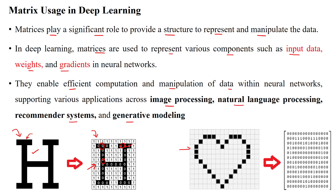Likewise, here we have another image which is the input we are getting from the input data. This image shows the symbol of a heart, represented in the form of zeros and ones. The background is represented as zeros, and the symbol which has black dots is represented using ones. These ones form the symbol heart.